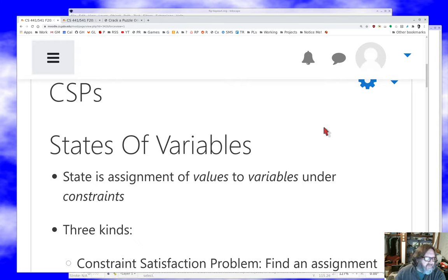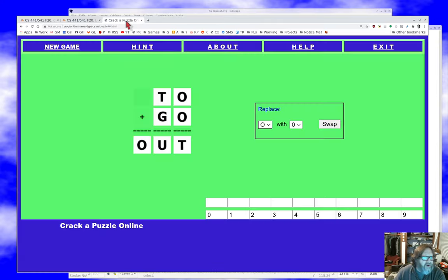If we want an example of this, I think cryptarithmetic are a good way to go. This is a little cryptarithmetic puzzle, and the idea of cryptarithmetic puzzles is that you try to assign values to the variables such that this equation works. So I can set O to zero maybe, and T to one, and G to two, and U to three. But if I do that, then the math won't work, it won't add up.